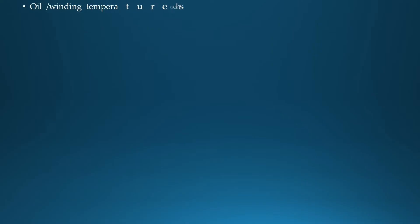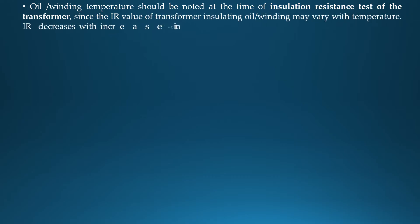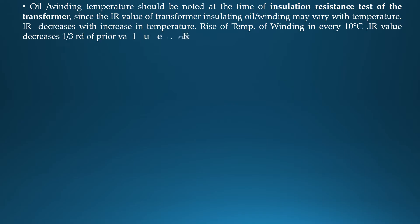Oil or winding temperature should be noted at the time of insulation resistance test of the transformer, since the IR value of transformer insulating oil or winding may vary with temperature. IR decreases with increase in temperature. A rise in winding temperature of every 10 degrees centigrade causes the IR value to decrease to one-third of the previous value.